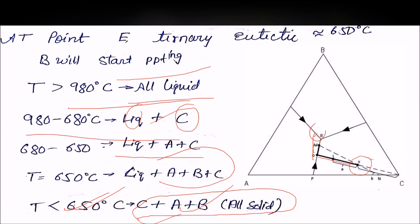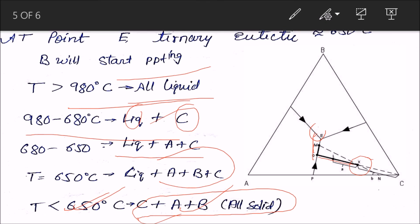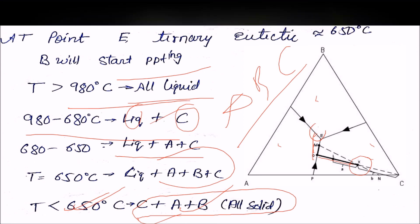So this is the explanation of the ternary diagram and you can now calculate anything for an exam. X can start from anywhere in the diagram. As long as all the two-component systems are binary eutectic, all three crystals A, B, and C will be found in the final solid.